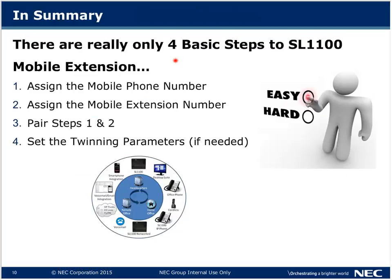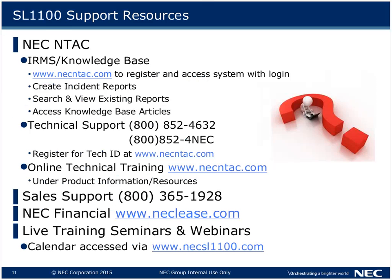To recap, there are four basic steps to setting up the SL1100 mobile extension: assign the mobile phone number to a speed dial bin, assign the mobile extension number, pair steps one and two, and set the twinning parameters if needed. If you need help, you should be registered at our NTAC website, or you can call tech support at 1-800-452-4632. We also have sales support available, as well as NAC Financial Services for leasing, and our live webinar calendar is on the NTAC website.